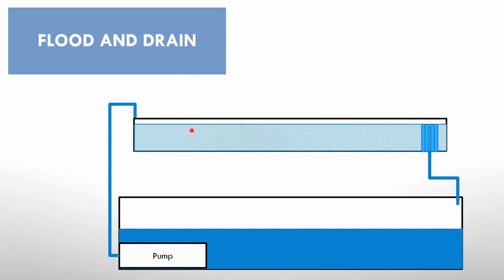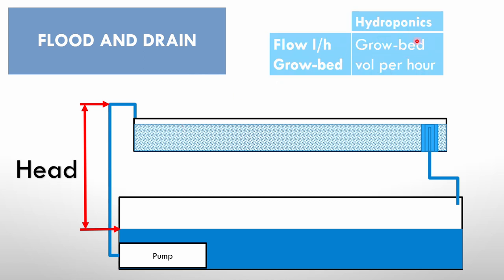Then we've got our flood and drain system, and you can see your media here, you can see your bell siphon. Again, your head from the lowest point that the water will go in your sump till the highest point that you can lift your water. That's your head, and then again your flow rate is equal to the volume of your grow bed. Please pay attention that in a flood and drain system you've normally got grow media in here, it may be expanded clay pellets or gravel, crush rock, any type of media that you've got there.